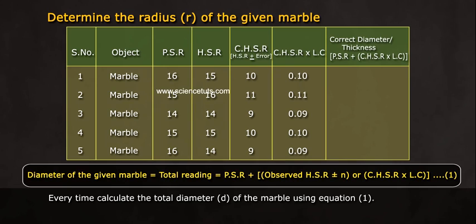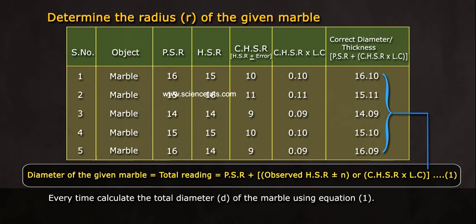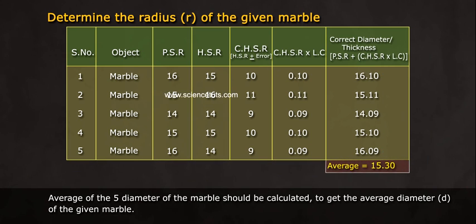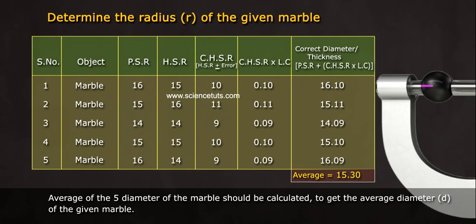Every time, calculate the total diameter D of the marble using equation 1. Average of the five diameters of the marble should be calculated to get the average diameter D of the given marble.